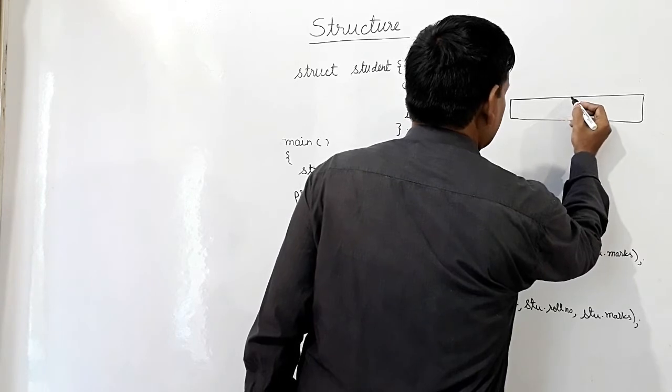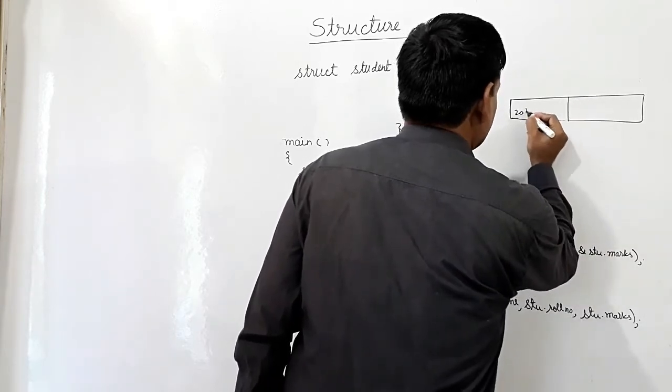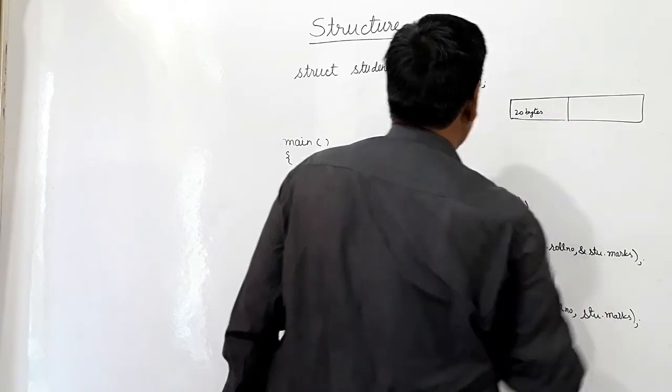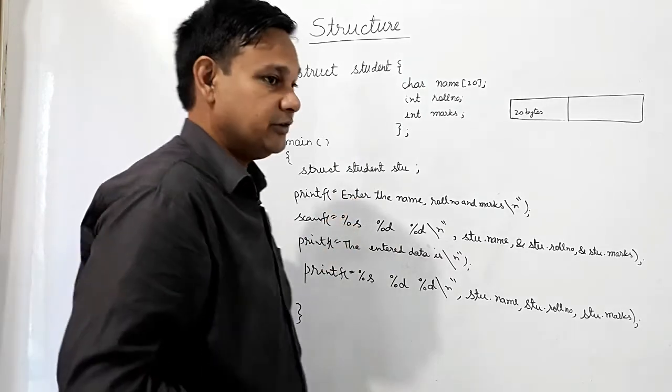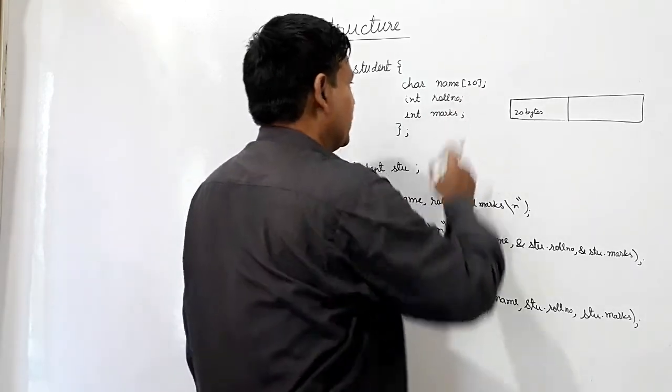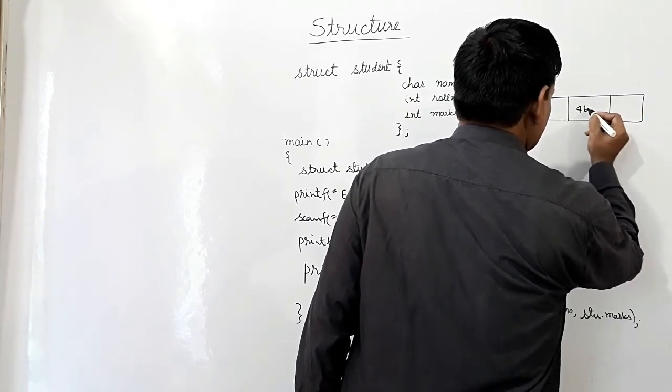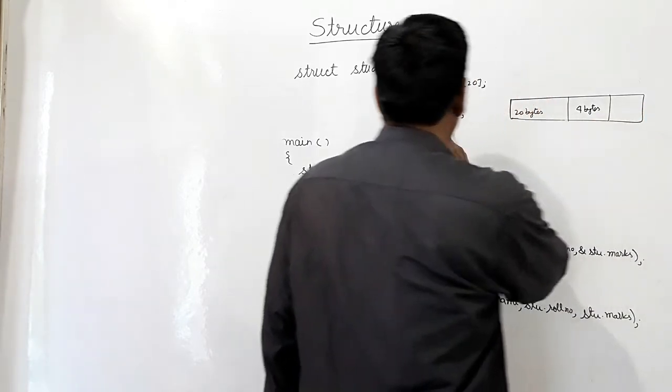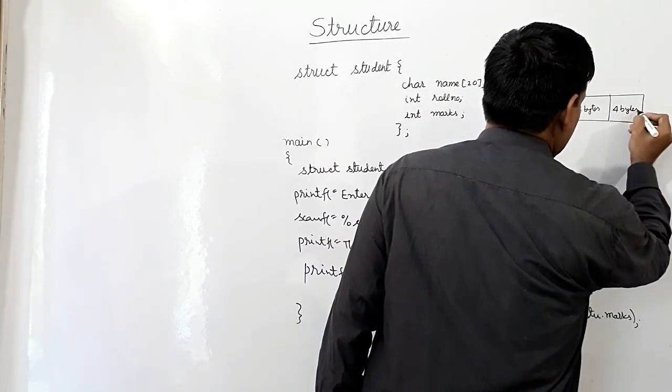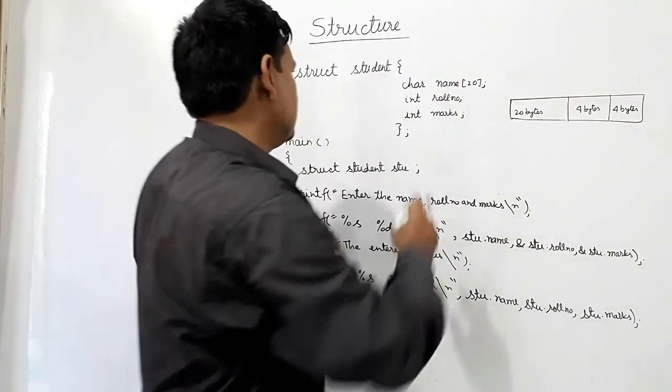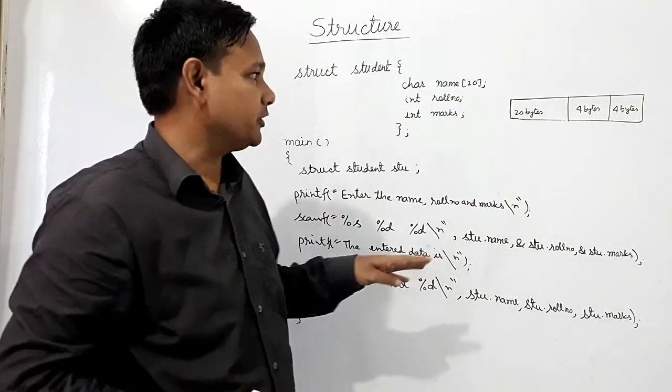For example, it's 20 bytes because size of character is 1 byte in GCC. And role number will take 4 bytes. And marks will take 4 bytes. So size of this structure student will take 28 bytes.